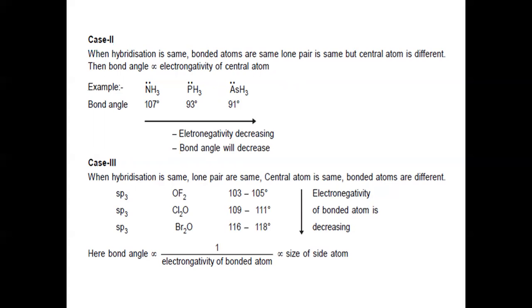Case 3 — when hybridization, lone pairs, and central atom are same but bonded atoms differ: for OF₂ (103–105°), Cl₂O (109–111°), and Br₂O (116–118°), all have oxygen as the central atom undergoing sp³ hybridization but bonded to different atoms. As we move from OF₂ to Br₂O, electronegativity of the bonded atom decreases and bond angle increases. Bond angle is inversely proportional to electronegativity of bonded atom and directly proportional to size of the adjacent atom.